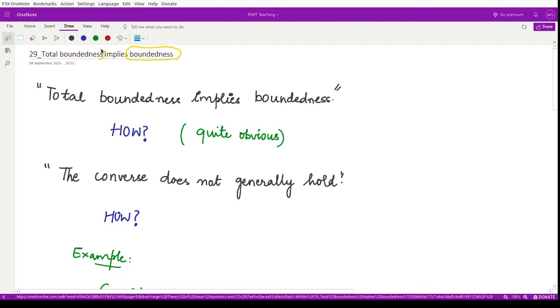How total boundedness implies boundedness is quite obvious if you look at the definition. For total boundedness, it suggests that for any set B, if we are able to define a finite epsilon net, in that case we call that set to be totally bounded. Using this definition we can then say it is also bounded because now we